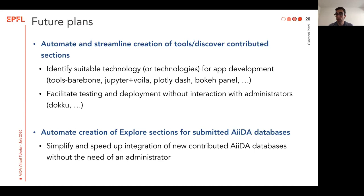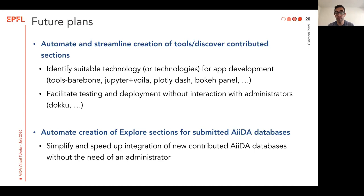In a similar way, Explore sections can already be created almost automatically from AIDA databases. And as you saw, if you have your own AIDA instance running even locally, you can already use the Explore provenance browser online to look at your data. What we want to do is simplify and speed up the integration of new contributed AIDA databases without the need of an administrator. Now you can share your AIDA export files on the Archive and anybody can download and install them locally, but you still need to ask one of us if you want your data published as a new Explore section. We want to make it easy and make it closer to what happens on GitHub with Git pull and push — so we'd like to eventually have something where you can do Verdi pull and push to upload your databases to the Materials Cloud Explore section.